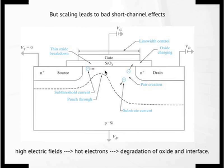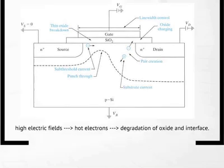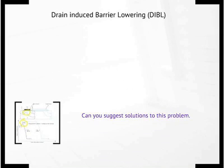Gate leakage current is a problem because you don't want the gate voltage to create a current path. If it does, you will lose some of the potential — it starts dropping across the semiconductor, not just across the gate oxide — which will also distort your output. These are very important issues when dealing with small transistors. I recommend reading the textbook section on this in more detail, but I want you to understand it qualitatively.